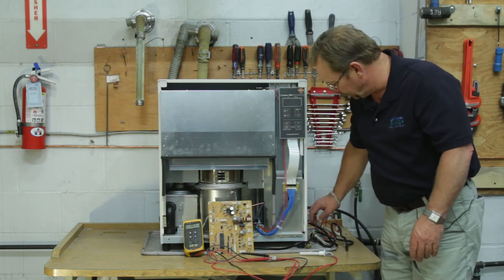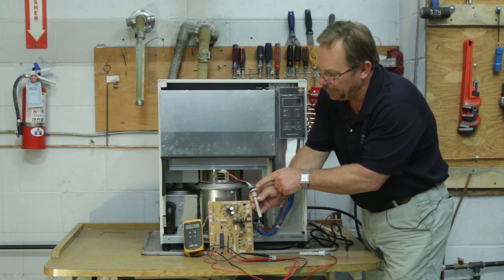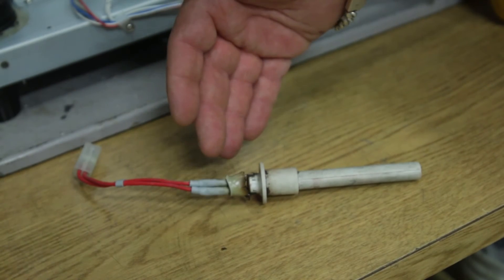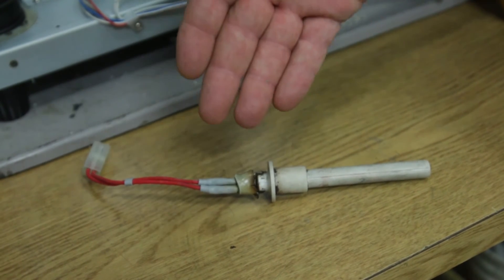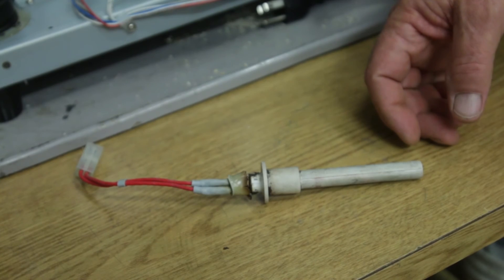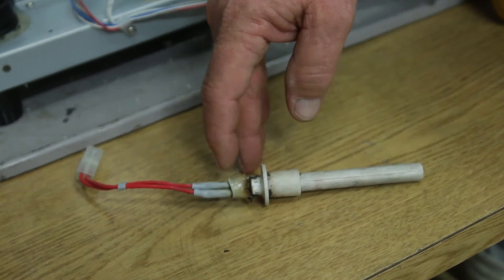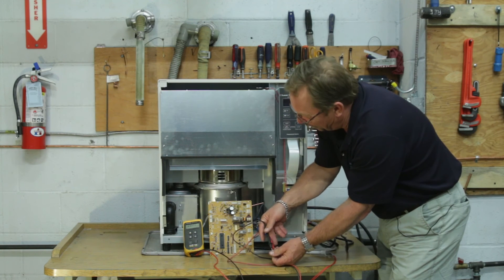We can have other issues going on with igniters, such as this one right here where we have burnt the back side off. What always surprises me about this is even as ugly looking as this igniter is, look at when we take our multimeter and come right on the back side of this, just like we did on the other one, and take that resistance reading.